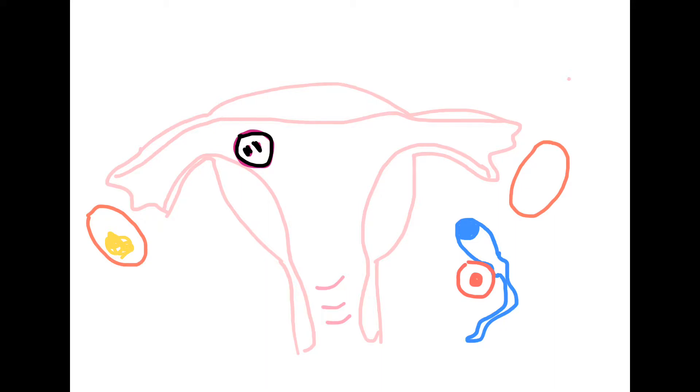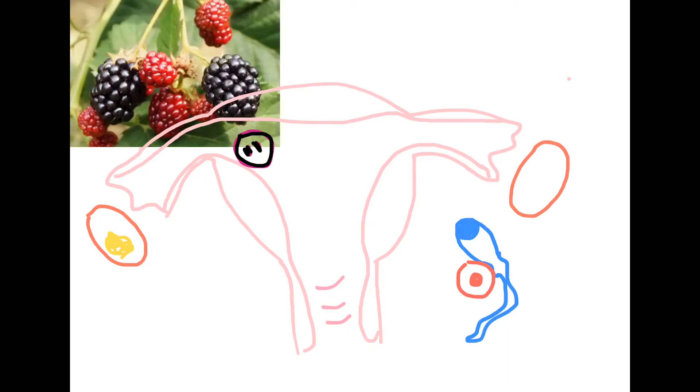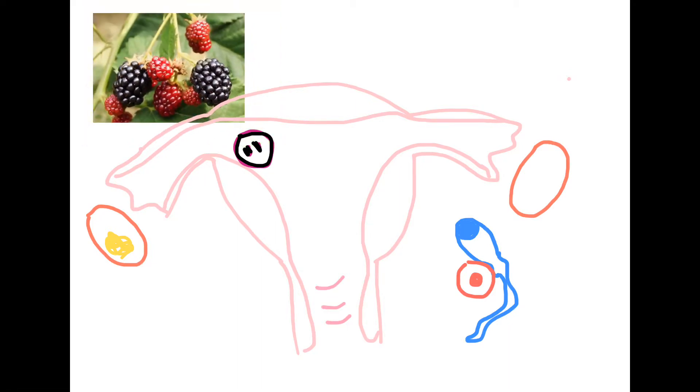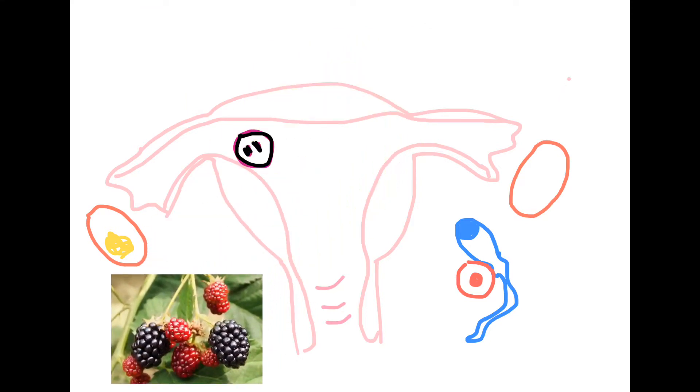This zygote undergoes a process known as cleavage where it divides into multiple identical cells by mitosis. We have the 16. It goes from 2, 4, 8, 16, and 32. At the 16 stage it is called a blastomere. And at the 32 stage it's called a morula because really it looks like a mulberry. This is what a mulberry looks like.